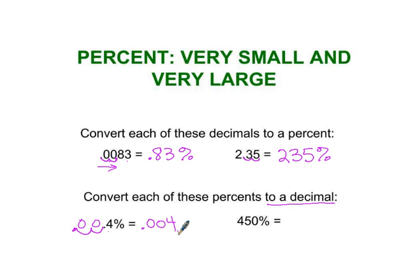Point zero four is 4 percent as a decimal. The decimal point is hidden in 450. It's right here after the whole number. That would be the case for any whole number percent, and I move that over two spots to the left, and I get 4.50 or 4.5 as a decimal number.